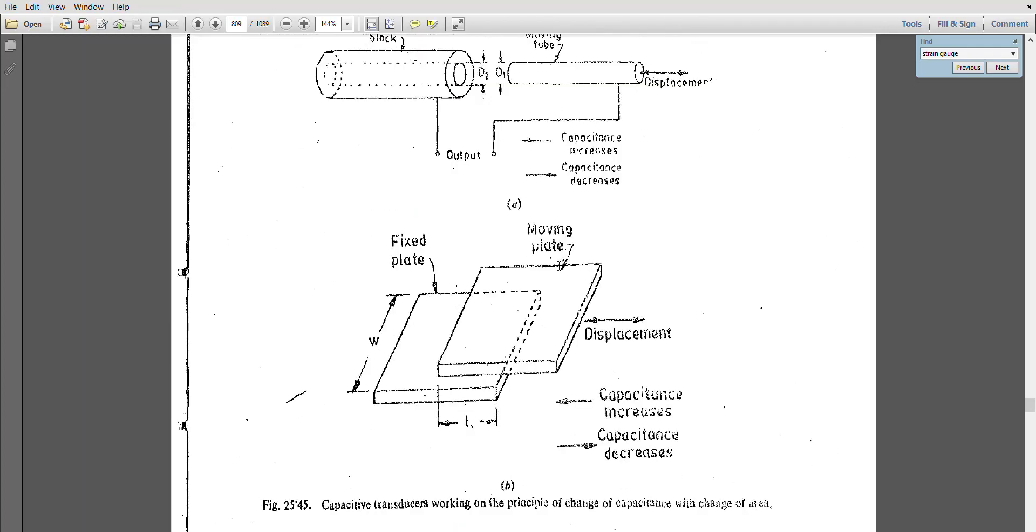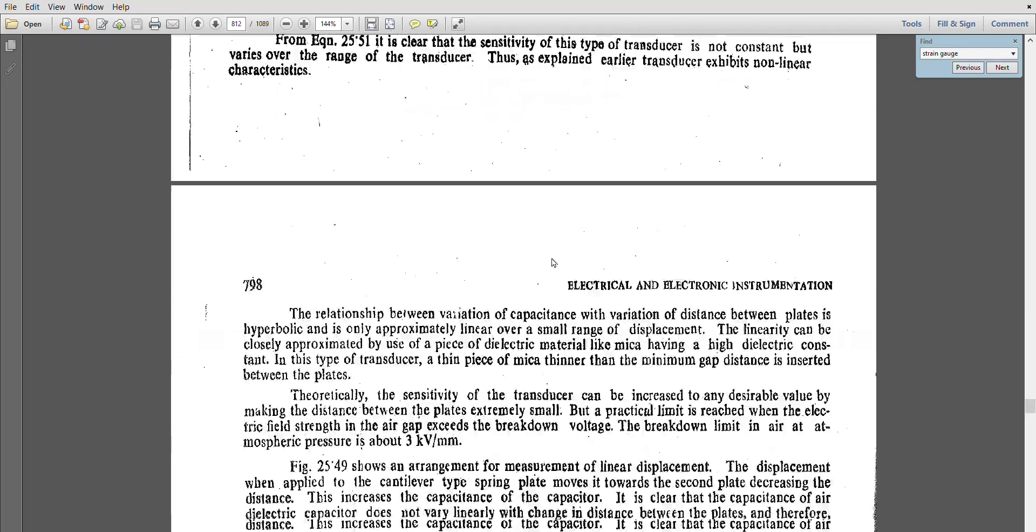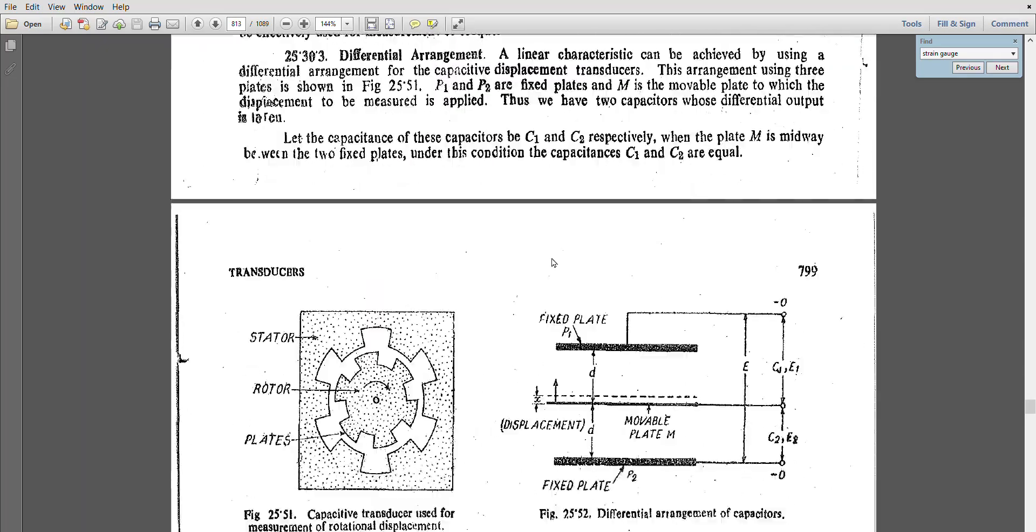By changing the distance, by changing the area and the dielectric constant, your capacitance can be changed and your voltage in the bridge can be changed, which can be directly calibrated to pressure or displacement.